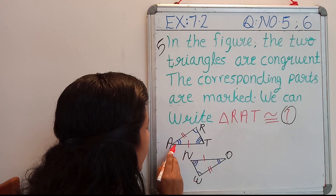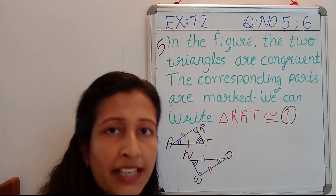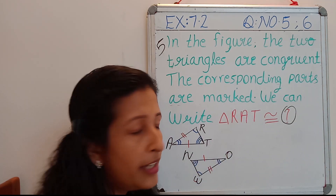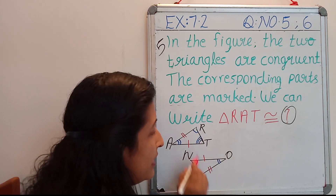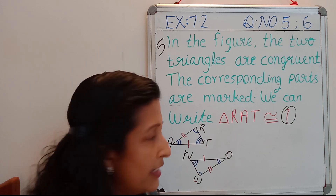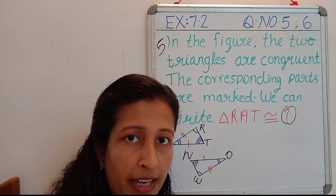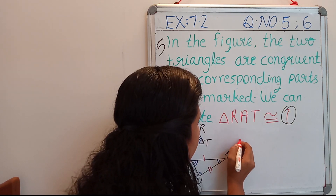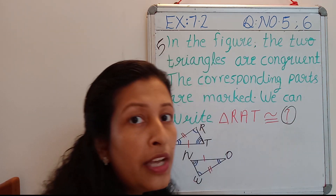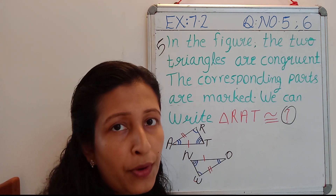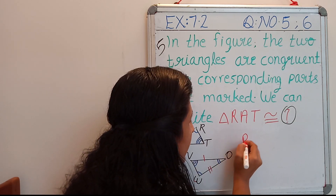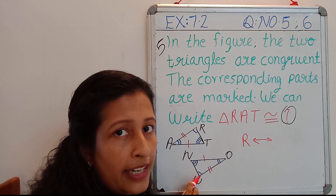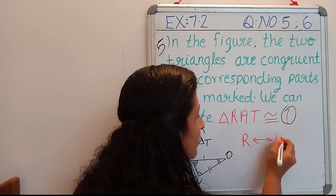This indicates that the single-mark angles are the corresponding angles and they are equal. Then these two double-line angles are the corresponding angles and they are equal — because these two triangles are congruent. Then the three-line angles, angle T and angle N, are the corresponding angles and they are equal. Now we are going to find out what triangle ART is congruent to. First, we can find the corresponding angle of angle R. R is corresponding to — single line here, single line — so R is corresponding to W.